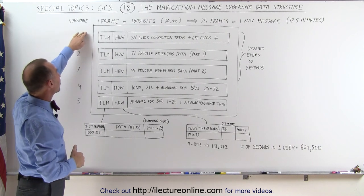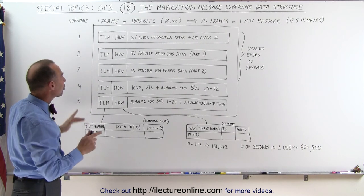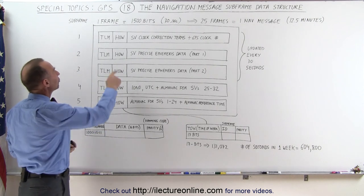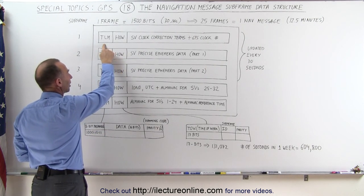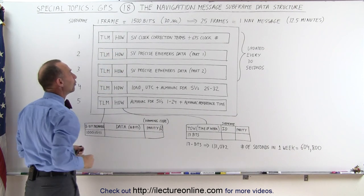In each frame, there are five subframes, one through five here. Notice that each subframe contains a TLM word and an HOW word. TLM stands for telemetry and HOW stands for handover.